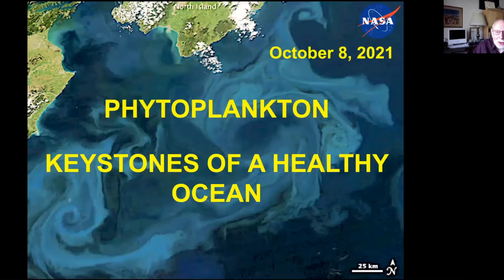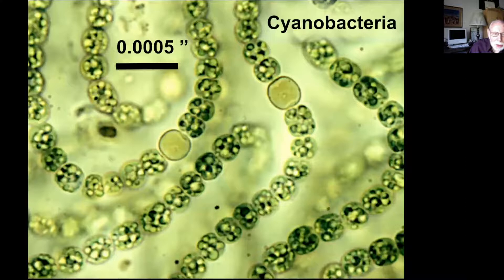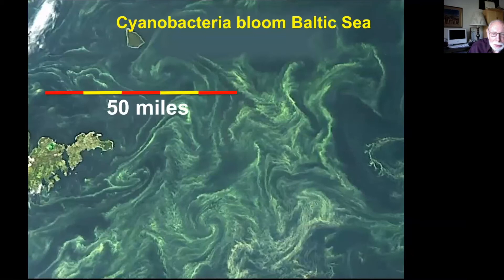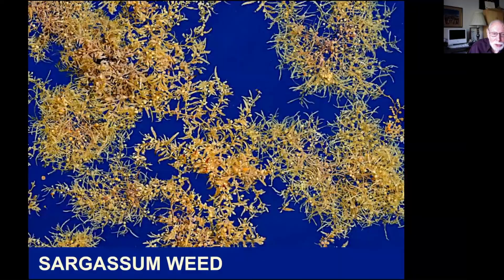Today we're going to talk about something entirely different: phytoplankton, which I consider to be the keystones of a healthy ocean. My definition, the one I like is from Encyclopedia Britannica: a flora meaning plants of freely floating, often minute organisms that drift with the water currents. This would include the minuscule cyanobacteria which can form huge blooms in the sea as well as the larger sargassum weed that drifts about the surface of the Atlantic Ocean and accumulates on its beaches.